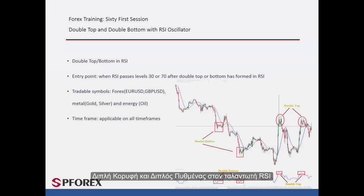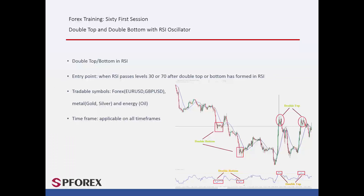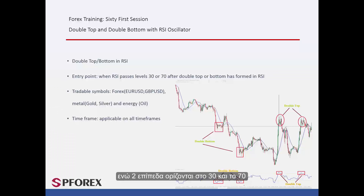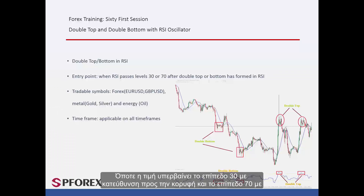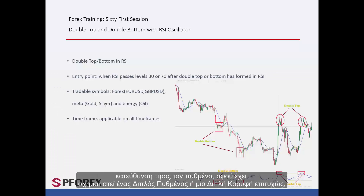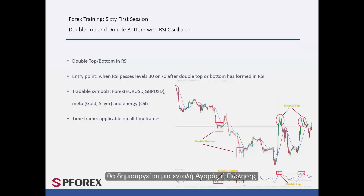Double top and double bottom in RSI oscillator. RSI value can be set on 14, while two levels are adjusted on 30 and 70. Whenever price crosses level 30 towards the top and level 70 towards the bottom after a double bottom or double top has formed successively, a buy or sell signal will be generated.